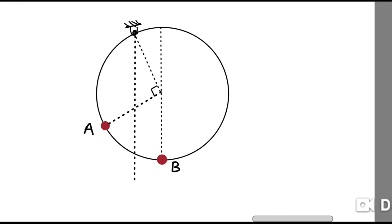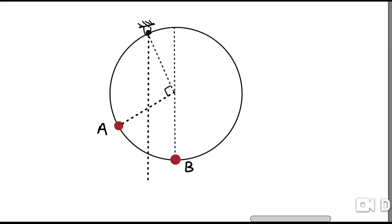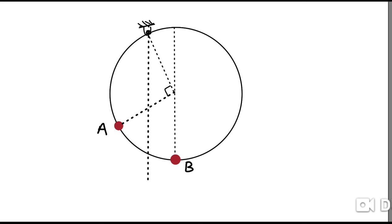Now for the second part. We need to determine the final equilibrium position. Bead B cannot remain at rest anywhere other than the lowermost position on the ring. If bead B were at any other position, there would be a component of mg along the tangent, which would push the bead downward. So ultimately, if the system has to remain at rest, bead B can only be at the lowermost position.